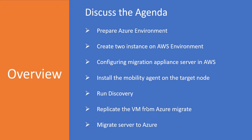Here is today's agenda: we are going to plan our overall migration from AWS to Azure. First we will prepare the Azure environment, then we will create two instances on the AWS environment. Once the instances are ready and we can connect to them, we will configure the migration appliance service on one of those AWS instances.